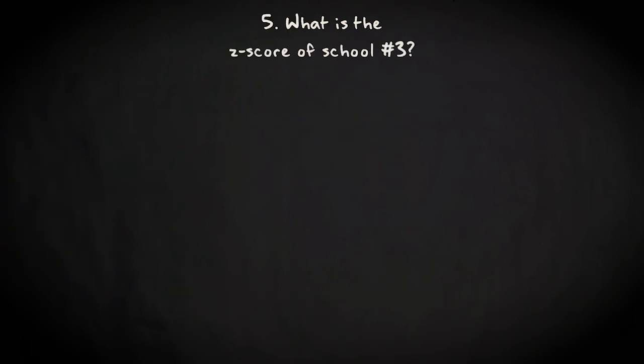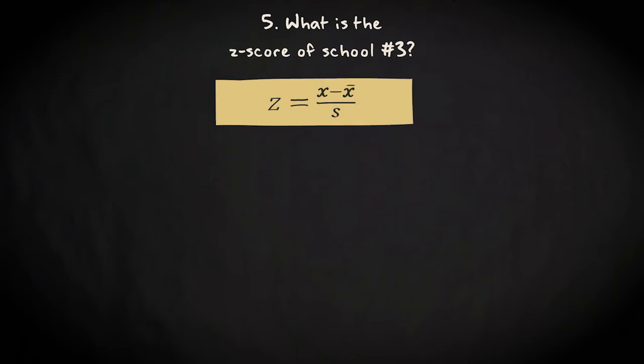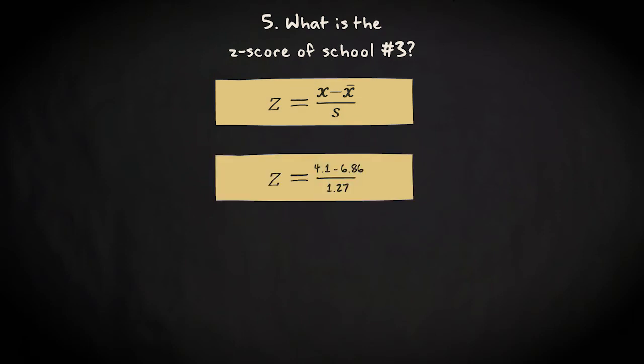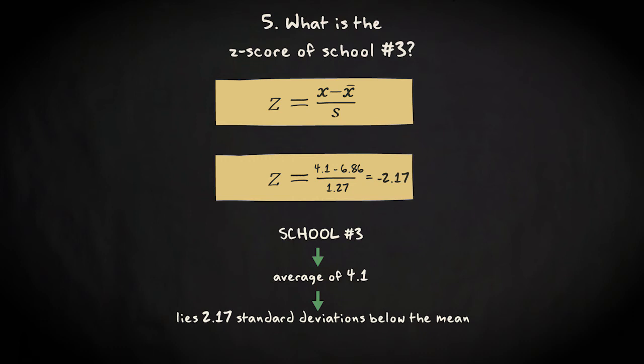The fifth and final thing we want to know is the z-score of school three. This is the formula. So that makes 4.1 minus 6.86 divided by 1.27. That makes minus 2.17. This indicates that this value lies 2.17 standard deviations below the mean, and can therefore be conceived of as a rather exceptional value.